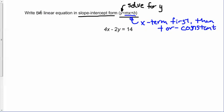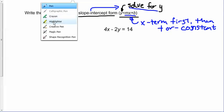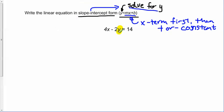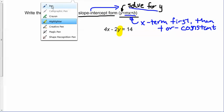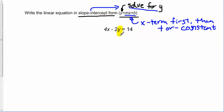When we see these directions to write a linear equation in slope-intercept form, when you see that, think solve for y. Get y by itself. Since we're going to get y by itself, I want to highlight that y to remind myself this is what I want to get by itself. We need to kick everything else over to the other side of the equation.